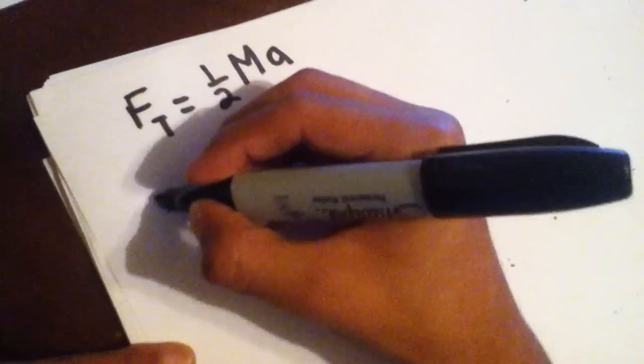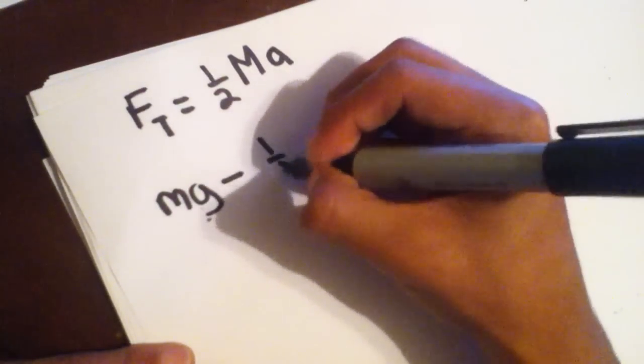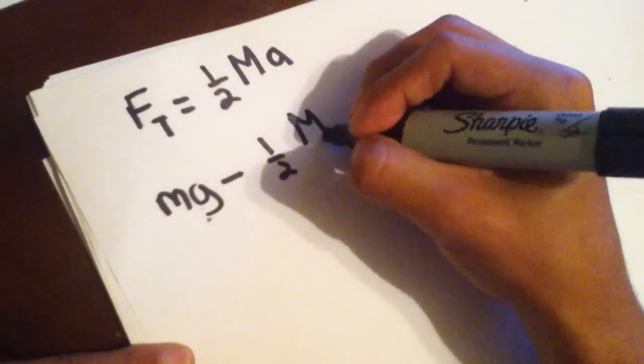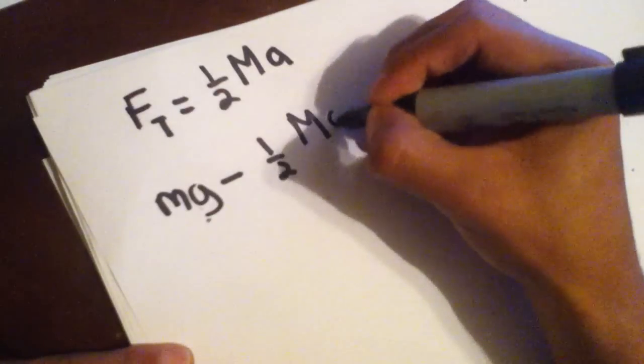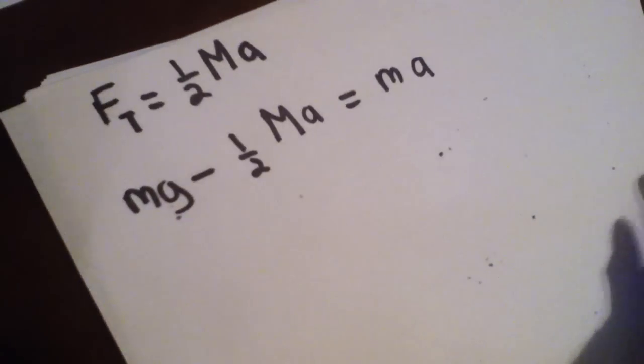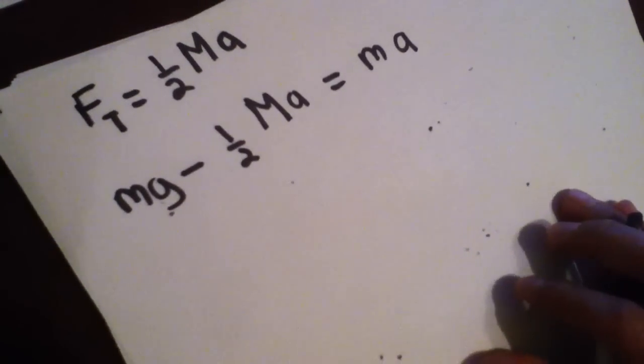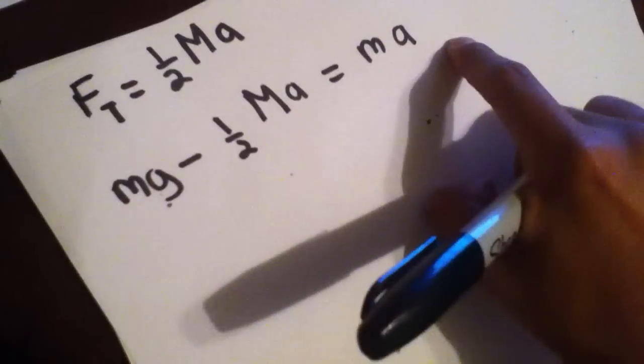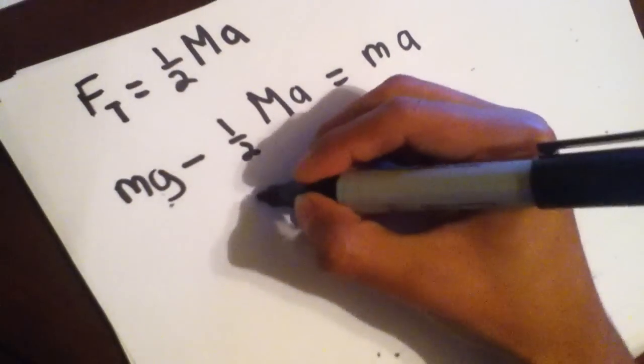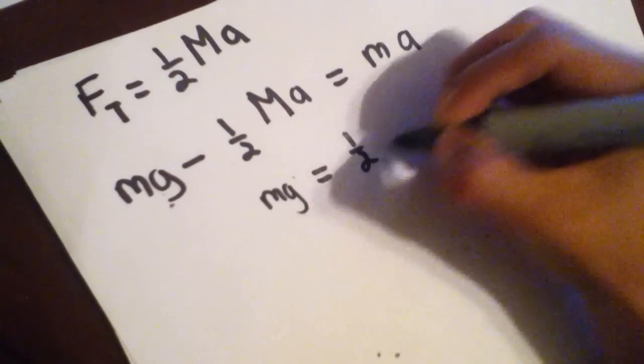So, you get Mg minus one-half big M, because that's the mass of the disc, times acceleration equals mass times acceleration. And pretty much here, we're on our way to solving this. There's not much steps to do this after this. You just add this on the other side. So then you get Mg equals one-half M.